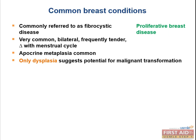Apocrine metaplasia — apocrine glands, which you tend to see in the axillae and pubic region — they like to mention apocrine gland metaplasia. Remember, metaplasia is simply one differentiated cell type converting to another, and it's reversible. They'll ask which characteristic of fibrocystic change most likely bears malignant potential, and they'll mention hyperplasia as an answer.